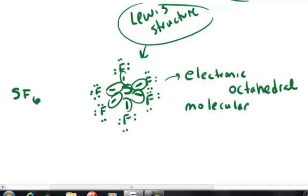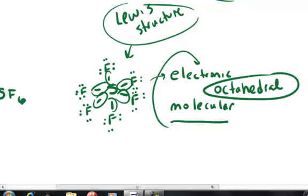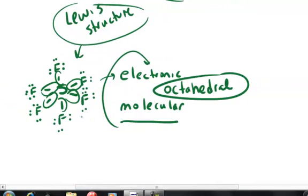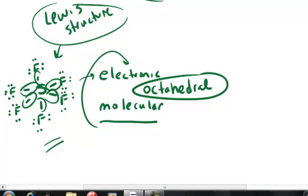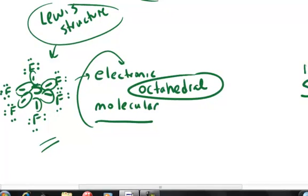And again, all the regions, the molecular geometry is going to be the same as the electronic geometry, which is octahedral. And to draw that structure, with a Lewis structure we don't have any kind of three-dimensional inklings about the structure. But when we draw the correct molecular shape, we need to indicate the bond angles in our drawing. And so this is how we do it for octahedral.